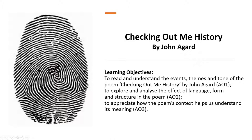For assessment objective two, I'm hoping to help you explore and analyse the effect of some of the language, the form, and the structure of the poem and how that creates meaning. And then finally, for assessment objective three, to appreciate how the poem's context helps us understand its meaning — both looking at the poet and the time it was written in, and thinking about some of the events and people that are mentioned and how that helps us understand the poet's motivation.